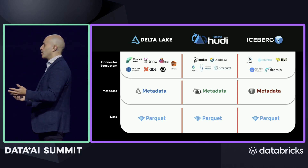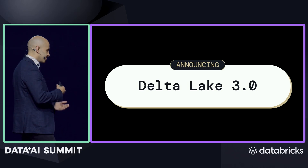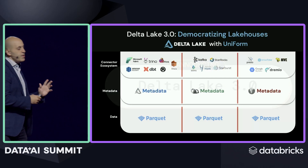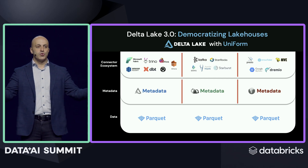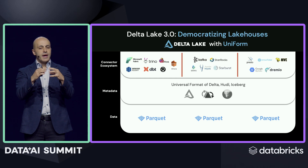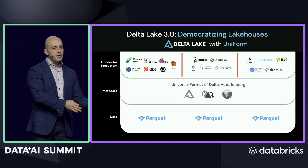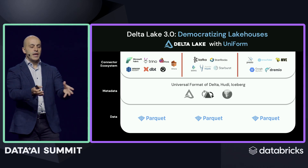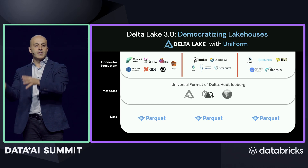We are super excited at Databricks to announce Delta Lake 3.0, which is actually in public preview today. Since it's all just Parquet files, we use Parquet in Delta. What we've done is unified the format of the metadata of all three projects inside Delta. We call this UniForm — short for Universal Format. So whenever you write data to Delta, it will generate metadata in all three formats: Hudi, Iceberg, and Delta.